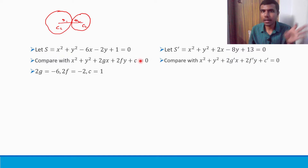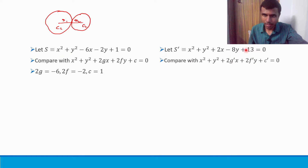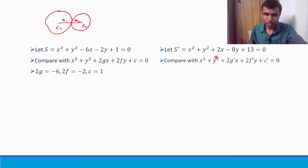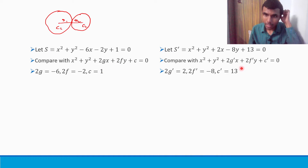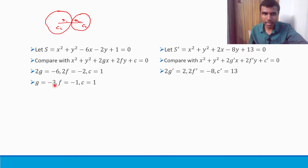That is why I took dashes — so you can understand what is on the left side and what is on the right side. Now, 2g equals minus 6, so g equals minus 3; 2f equals minus 2, so f equals minus 1; and c equals 1. For the second circle: 2g dash equals 2, so g dash equals 1; 2f dash equals minus 8, so f dash equals minus 4; and c dash equals 13.